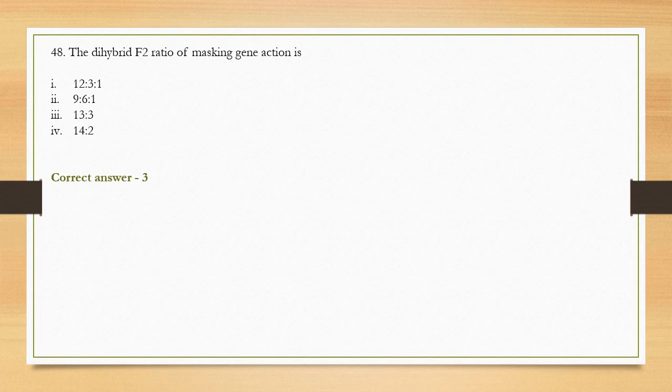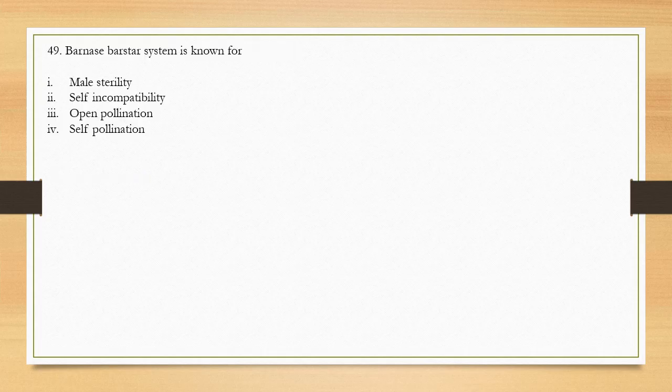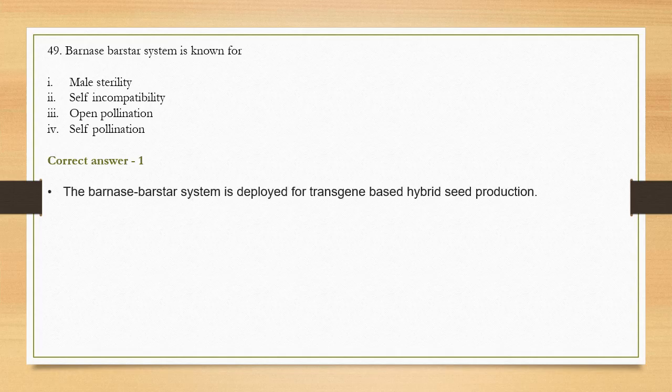Question number 49: The Barnase-Barstar system is known for — option 1: male sterility, option 2: self-incompatibility, option 3: open pollination, option 4: self-pollination. The correct answer is option 1, male sterility. The Barnase-Barstar system is deployed for transgene-based hybrid seed production — the hybrid seeds produced carry a gene for male sterility, which is the main feature of this system.